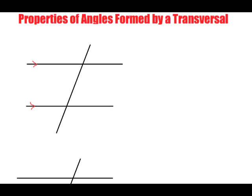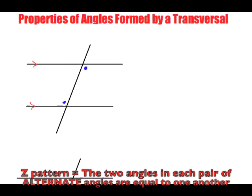Let's look at this interior angle here. These two angles — each pair of alternate angles — are equal to one another. If we label this as A and this as B, then A is going to equal B. I like to think of this as the Z pattern.